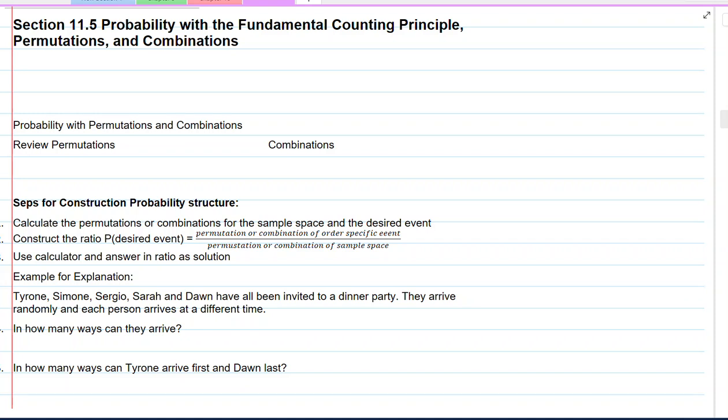Wow, we're now at a culmination of everything we've learned in this chapter. It was all about counting and probability. So in section 11.5, we're going to do probability with a fundamental counting principle, permutations, and combinations. Notice that we've got fundamental counting principle, in this case we're talking about more than one set of countable elements.